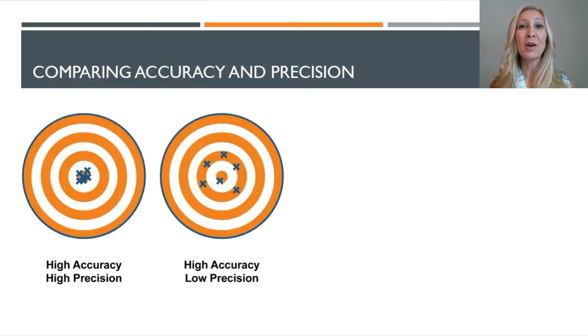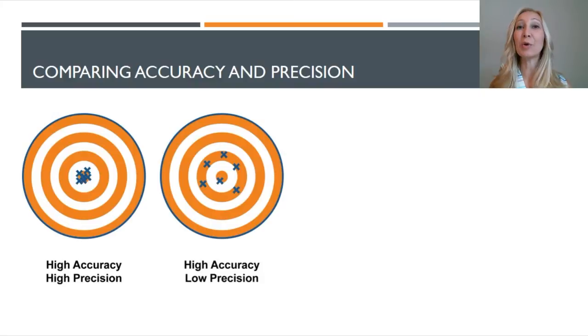Let's take a look at the second target. We have high accuracy and low precision represented here. So you'll notice each of the six trials, they're not anywhere near each other. This would show low precision, but they're centered around the bullseye of the target. This shows high accuracy. Now if I were to see an experiment with high accuracy and low precision, it would tell me that you probably had poor experimental technique, or maybe you were using instruments that weren't very precise.